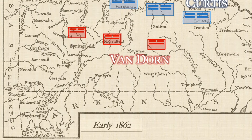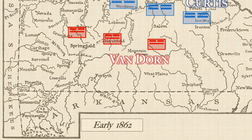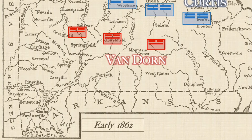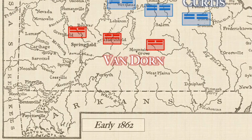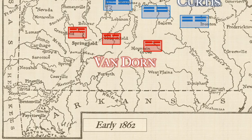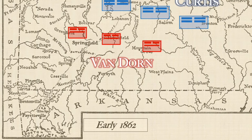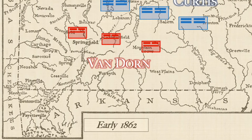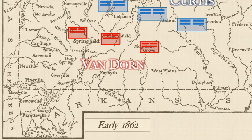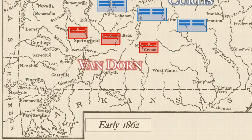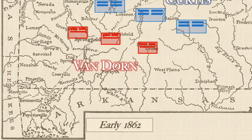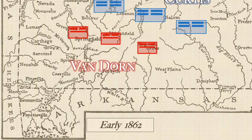After a series of early Confederate victories in Missouri, including the Battle of Wilson's Creek in August 1861, the political balance appeared to hang. Pressure in the North gave rise to a fresh campaign to expel the rebels.